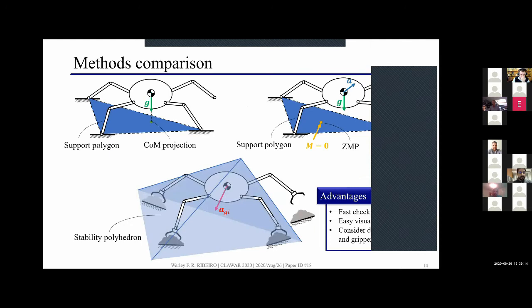Comparing this method presented here with other common equilibrium methods I showed before, the method we propose has a fast check and an easy visual comprehension similar to the support polygon idea but it also considered the dynamic effects similar to the ZMP approach. By considering also the gripper performance here using the maximum holding forces it can be easily applied to the climbing case while the polyhedron shape remains simple and fast to compute.